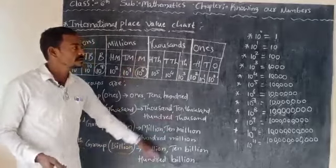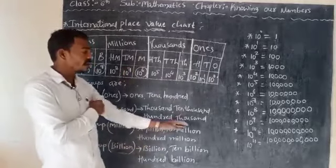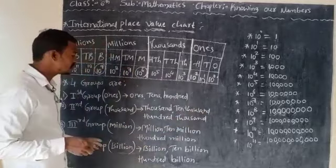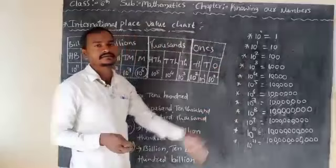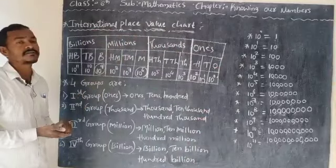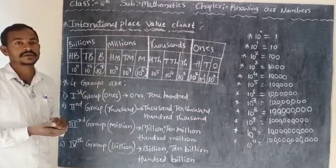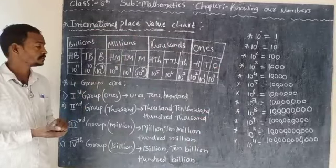These are the groups in the powers of 10. This is the chart of international place value.